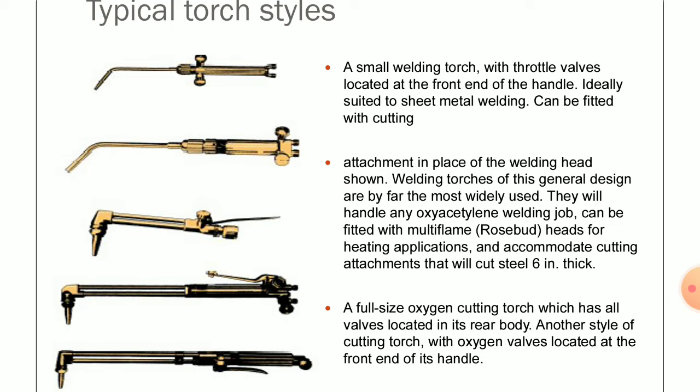We can provide sufficient length to each and every type of torch for that purpose. The attachment in place of the welding head, as shown in the picture — welding torches of this general design are by far the most widely used. They can handle any acetylene welding job, can be fitted with multi-flame heads for heating applications, and accommodate cutting attachments that will cut sheet metal up to six inches in thickness.